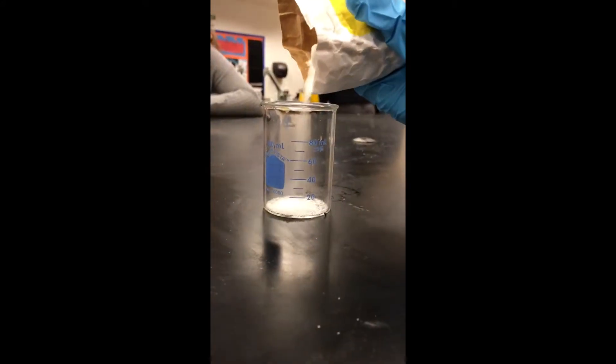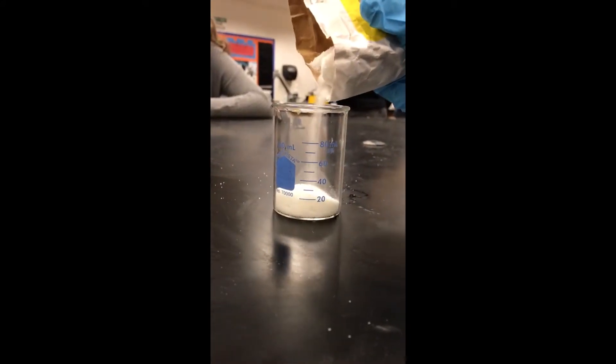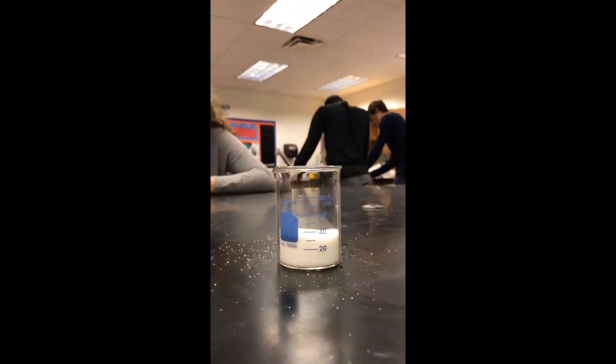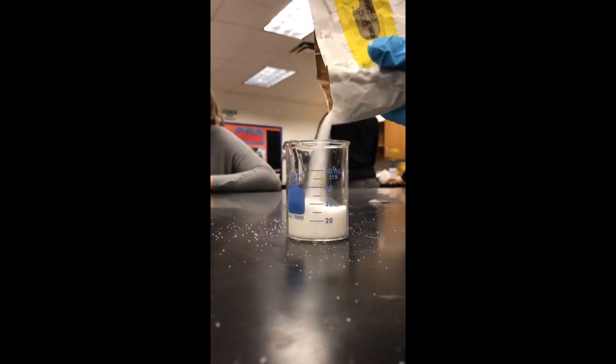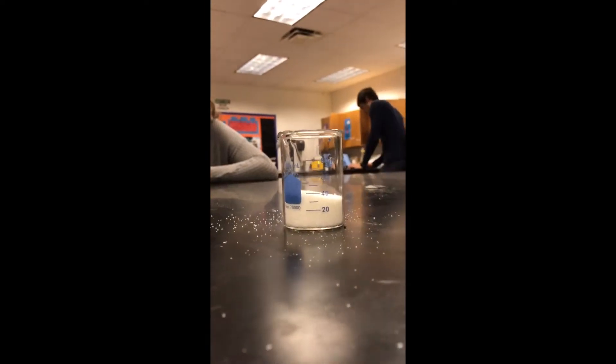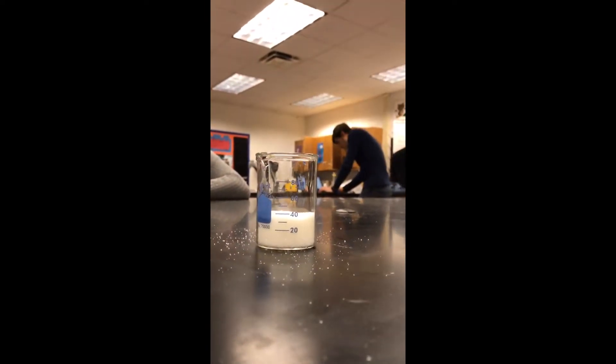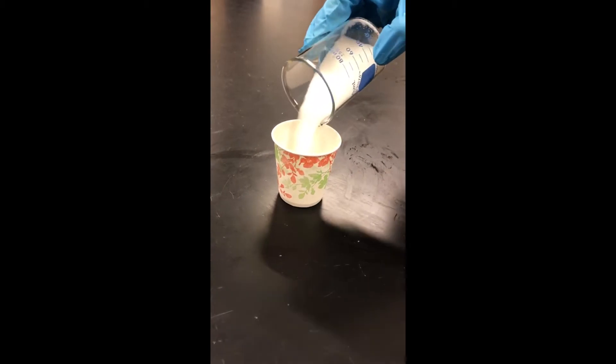In order for this experiment to work, we're going to need about a 2 to 1 ratio of sugar to sulfuric acid. So, we're going to pour enough sugar until about the 40 milliliter mark on the beaker. Next, we pour the sugar into the Dixie cup.